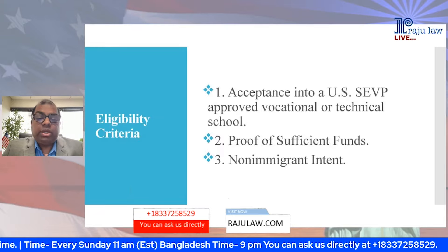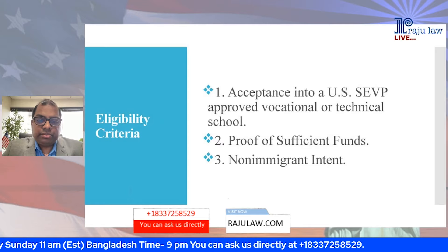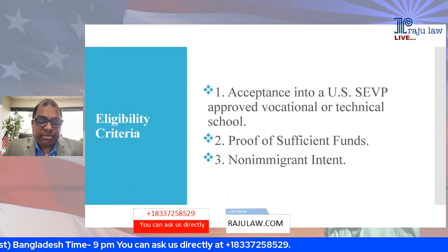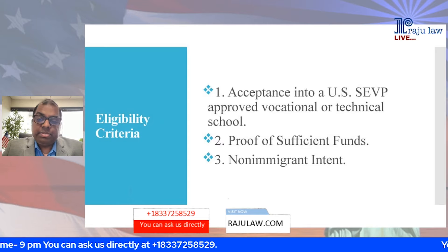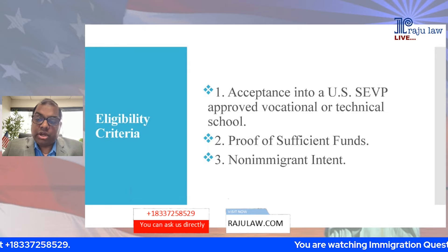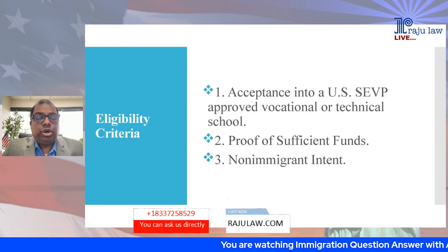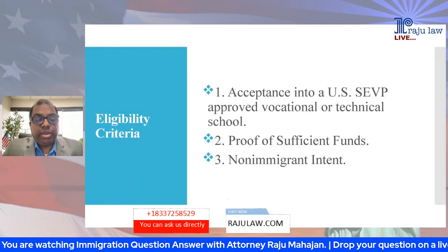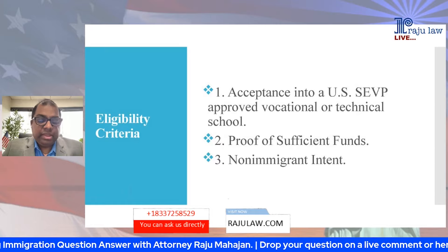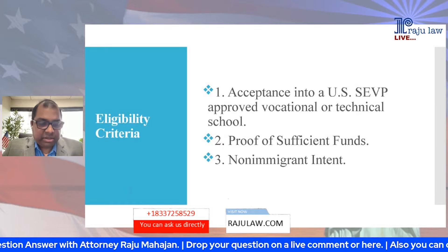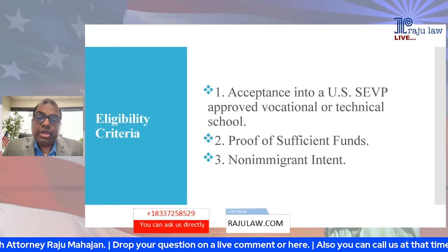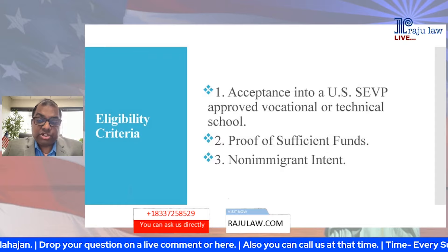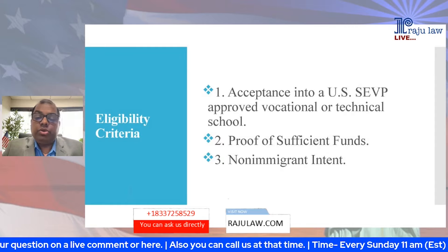What are the eligibility criteria for M1 visa? First, you must be accepted into a SEVP-approved vocational or technical school. Remember, there are some vocational or technical schools in America that are not SEVP approved. You must get admission specifically to a SEVP-approved vocational or technical school.